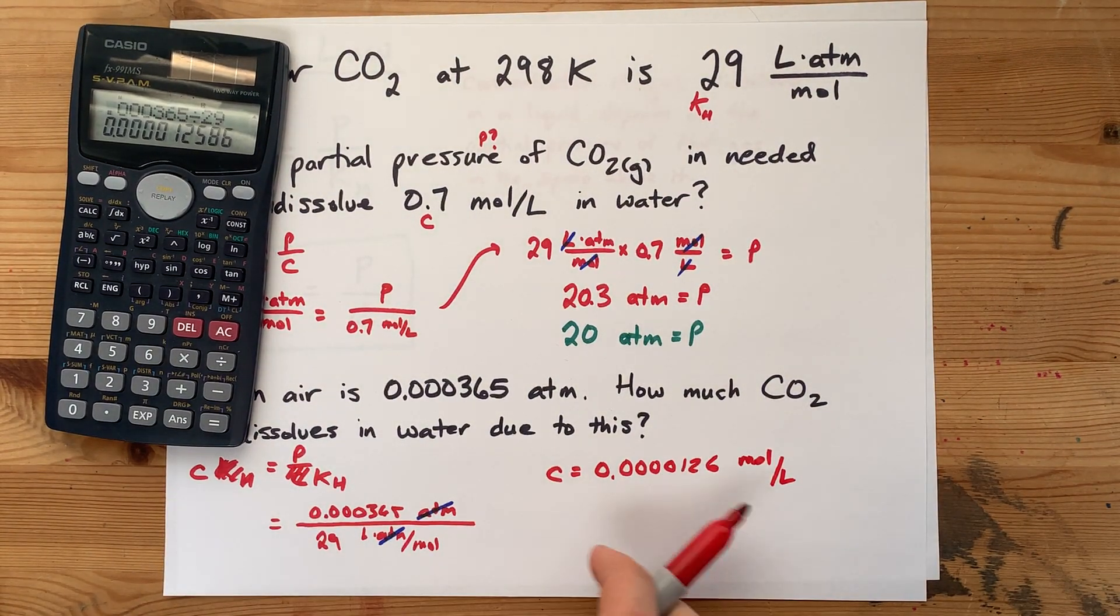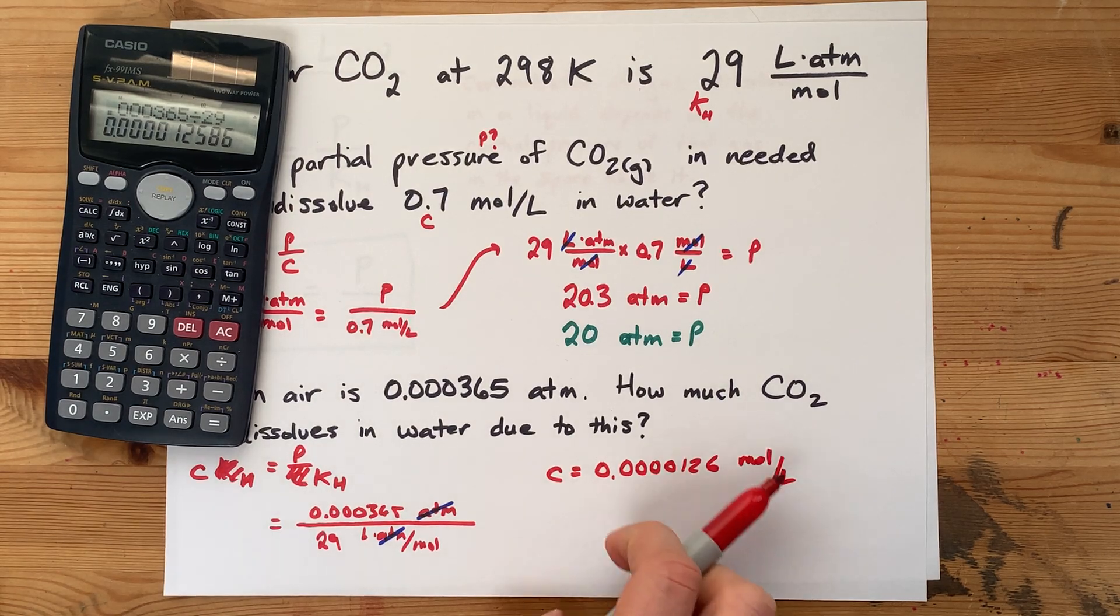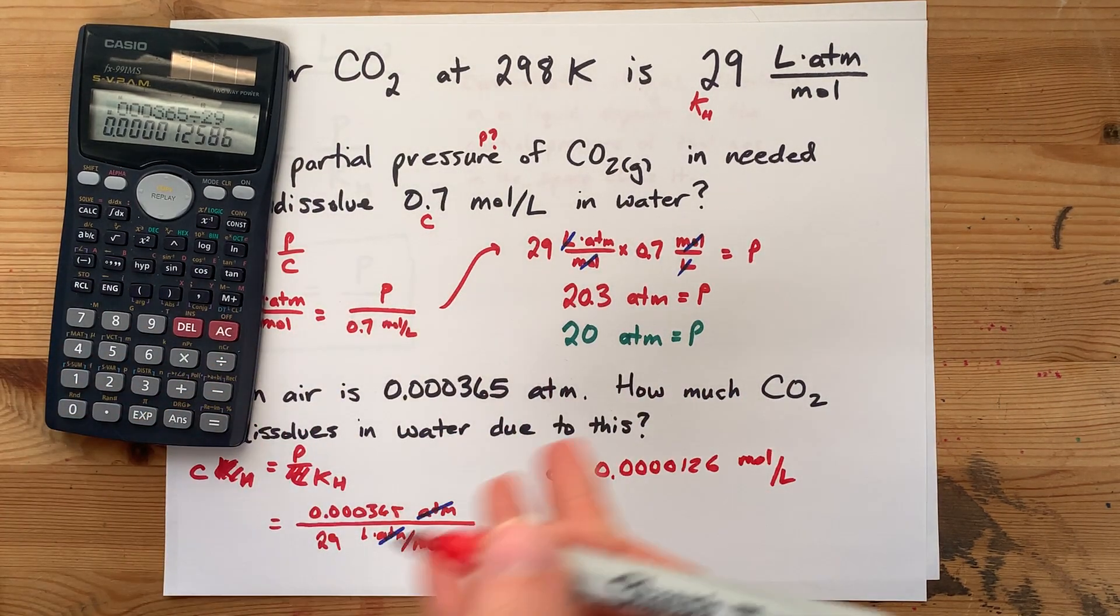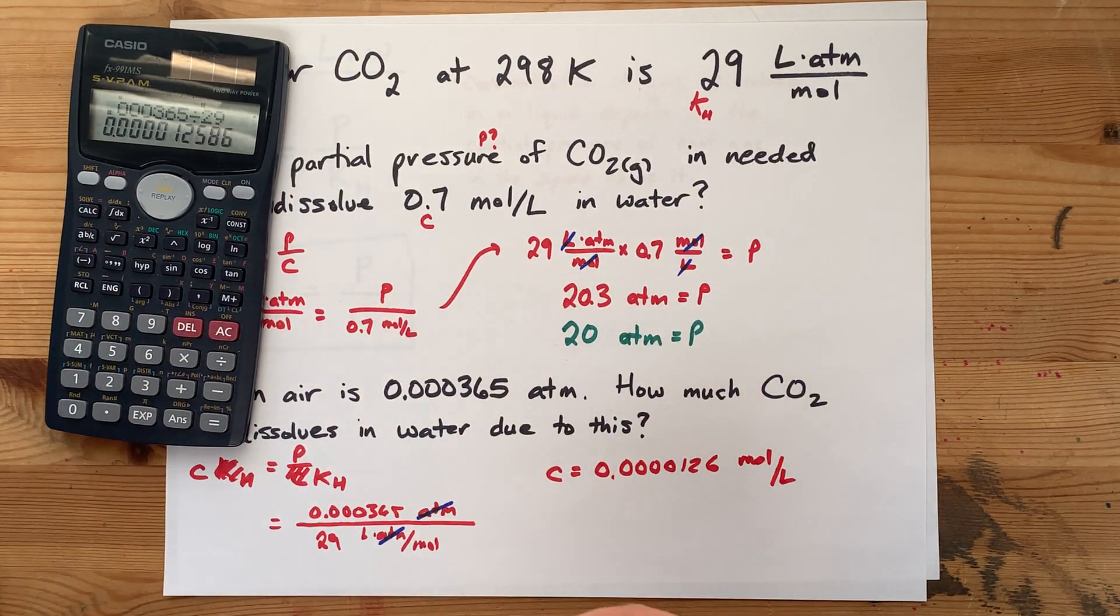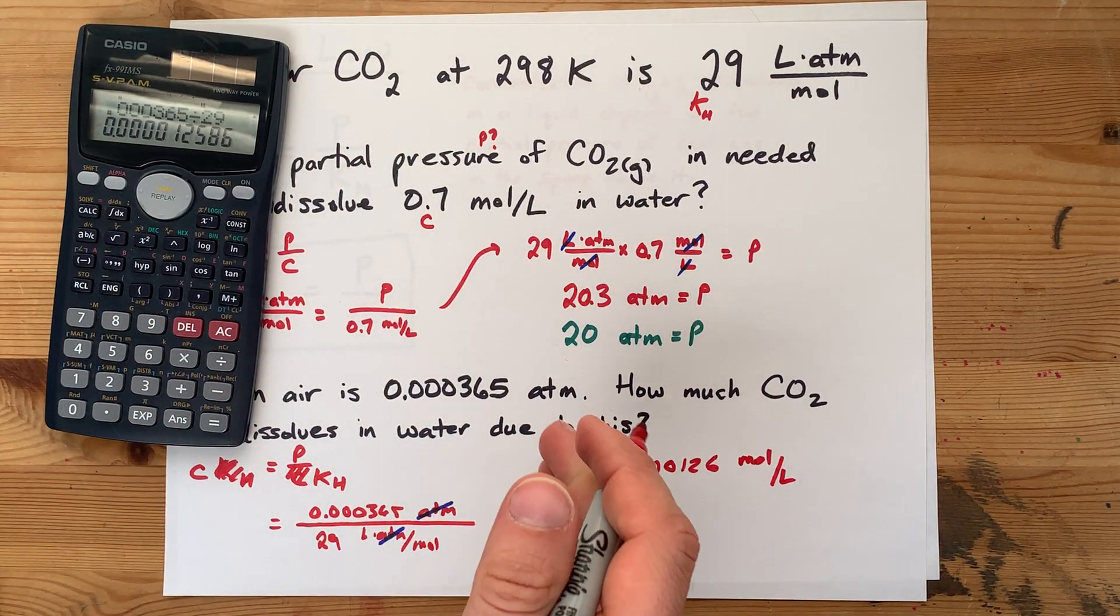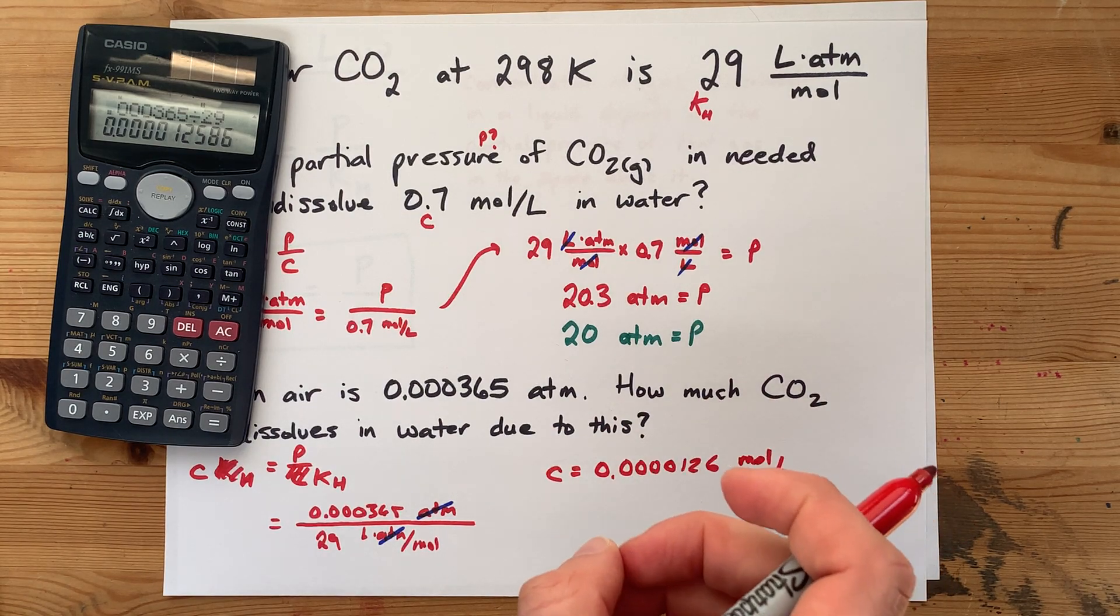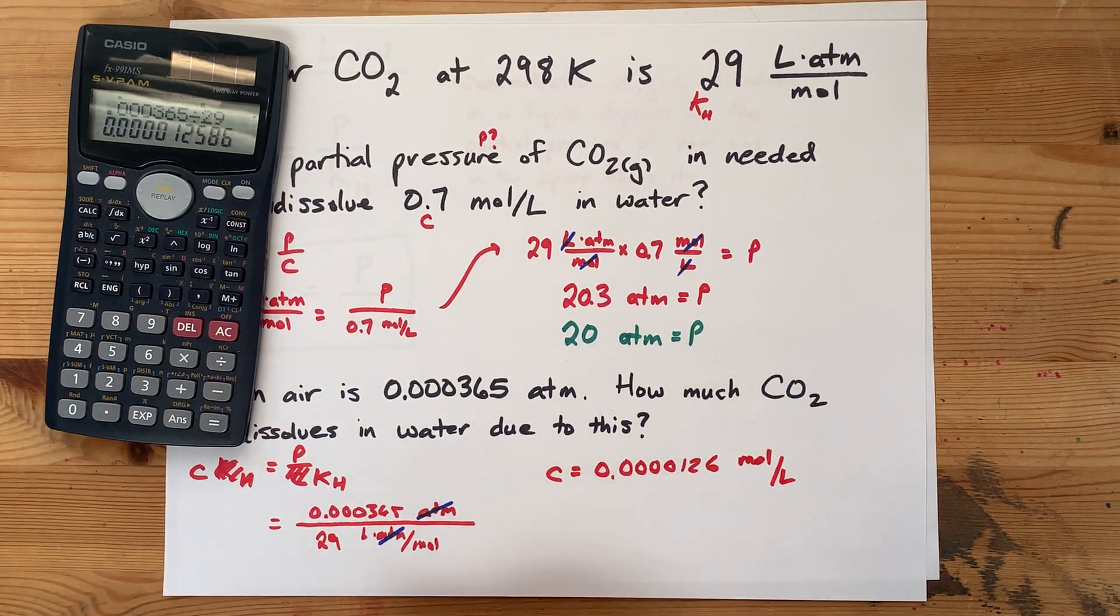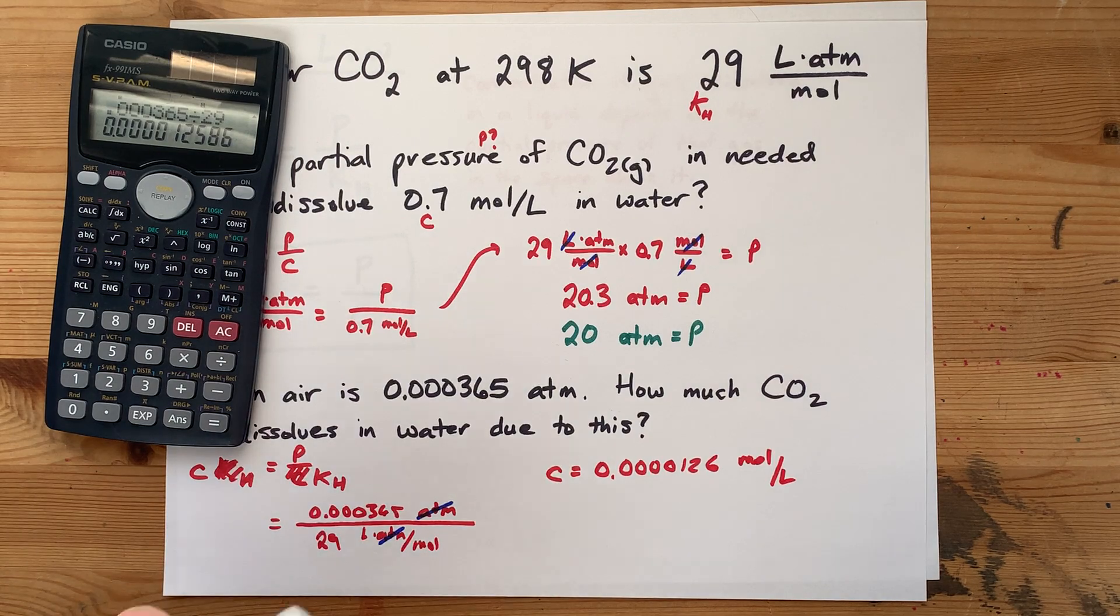Now that unit is in moles per liter. If you needed to, you could multiply it by liters to get the total number of moles that would dissolve, and then you can convert that to grams if you want. Really depends on what you're asked. How much usually refers to the number of moles, but it can also be grams, and here I'm just going to leave it as concentration for you. It's a tiny, tiny, tiny number. That's like 0.012 millimoles or something like that.